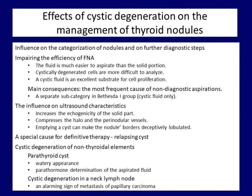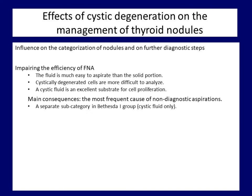Now we turn to the influence of cystic degeneration on everyday practice. The presence of cystic degeneration has a deep impact on cytology. Because cystic fluid is much easier to aspirate than the solid portion, it almost always dilutes the specimen — this can be observed even when we directly aspirate the solid part, because it is usually soaked in cystic fluid. Cystically degenerated cells vary in appearance and are more difficult to judge; additionally, fluid is an excellent substrate for cell proliferation, and occasionally a disturbingly cellular smear is prepared from cystic content. All of these conditions mean that cystic degeneration impairs microscopic analysis.